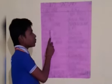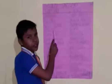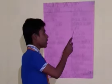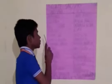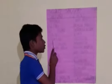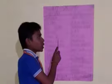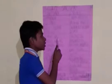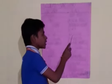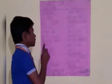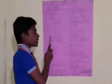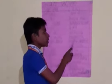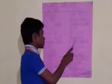Fourth is Balmiki Wildlife Sanctuary. It is in Bihar. Fifth is Mount Abu Wildlife Sanctuary. It is in Rajasthan. Sixth is Radha Nagri Wildlife Sanctuary. It is in Maharashtra.